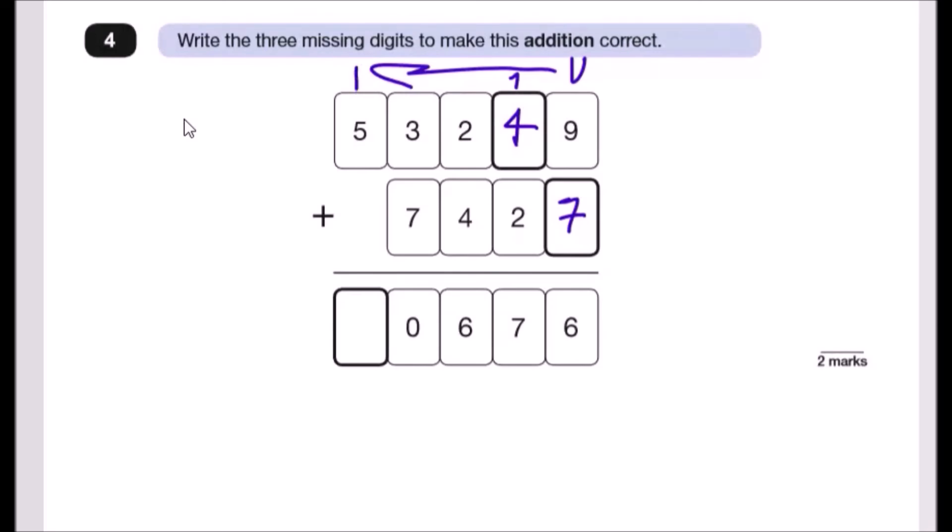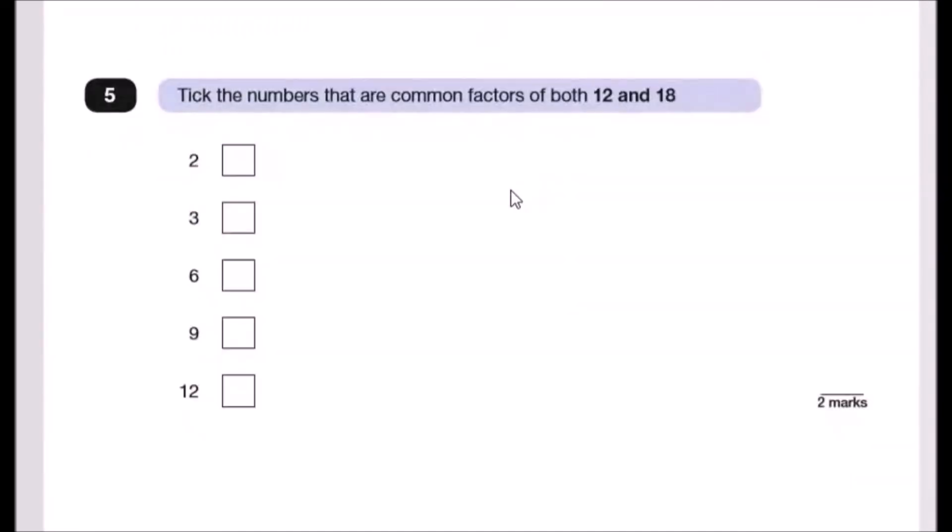Number five: Tick the numbers that are common factors of both 12 and 18. This means any numbers that both 12 and 18 are divisible by. They're both even numbers, so they're both in the 2 times table, so tick 2. They're both in the 3 times table. They both appear in the 6 times table. Only 18 appears in the 9 times table, so it doesn't count. Only 12 appears in the 12 times table. It should be the first three boxes.